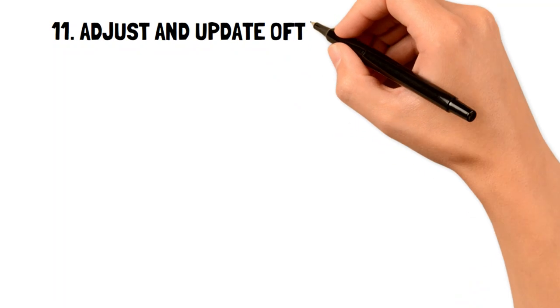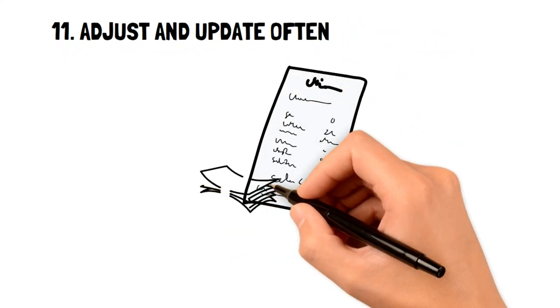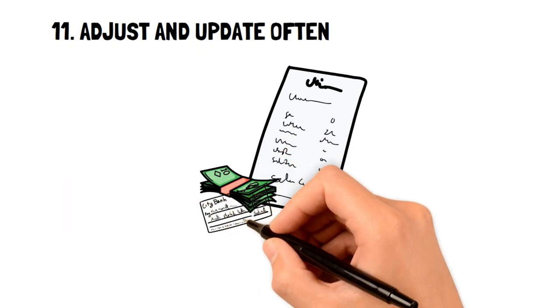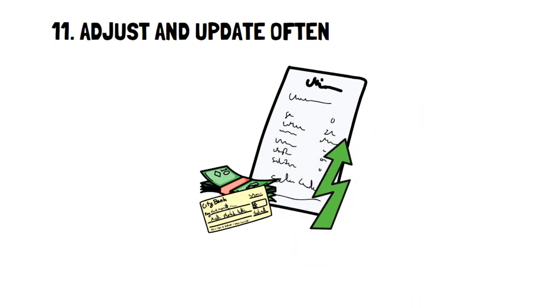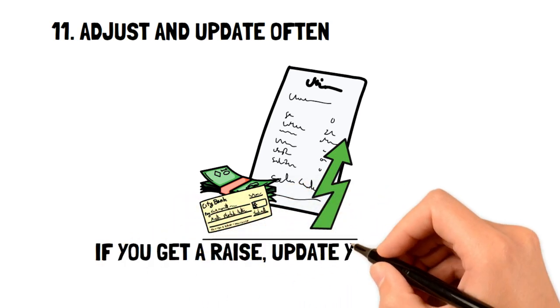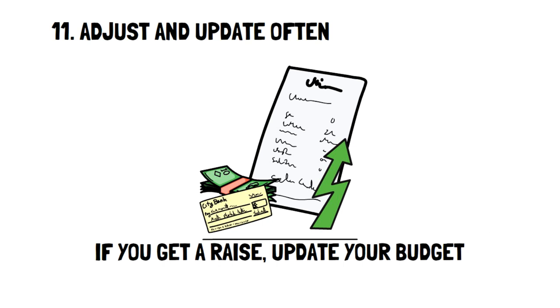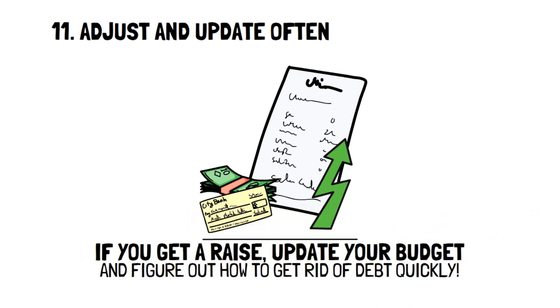11. Adjust and update often. Things are constantly changing in life and with those changes, it's necessary to adjust and update your budget. For example, if you're living on a low income but you suddenly get a raise, then you can go back to your budget and update the change in income and figure out how you can get rid of debt more quickly.